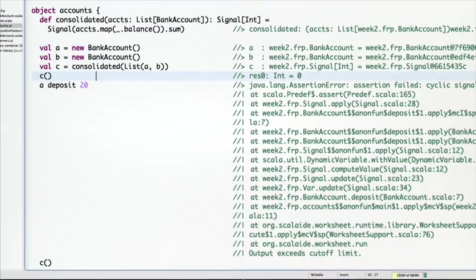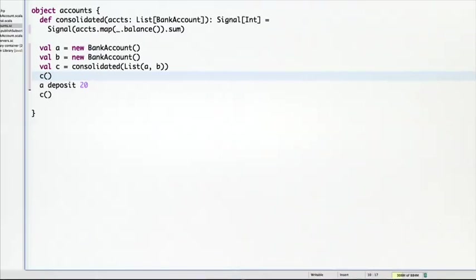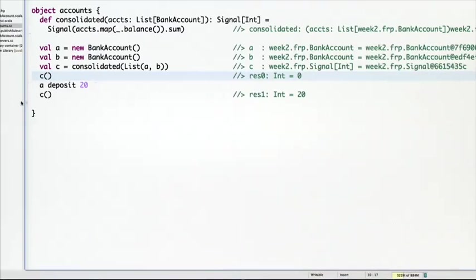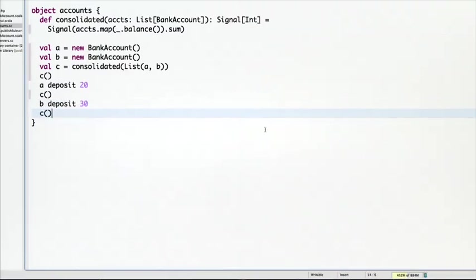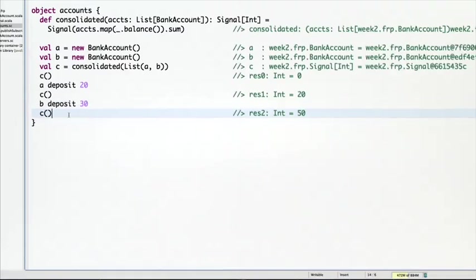Let's redo the worksheet with that example. And in fact, now we get the correct result, the a deposit is 20. Let's deposit as before 30 in b, call it again. And that would give us this here.